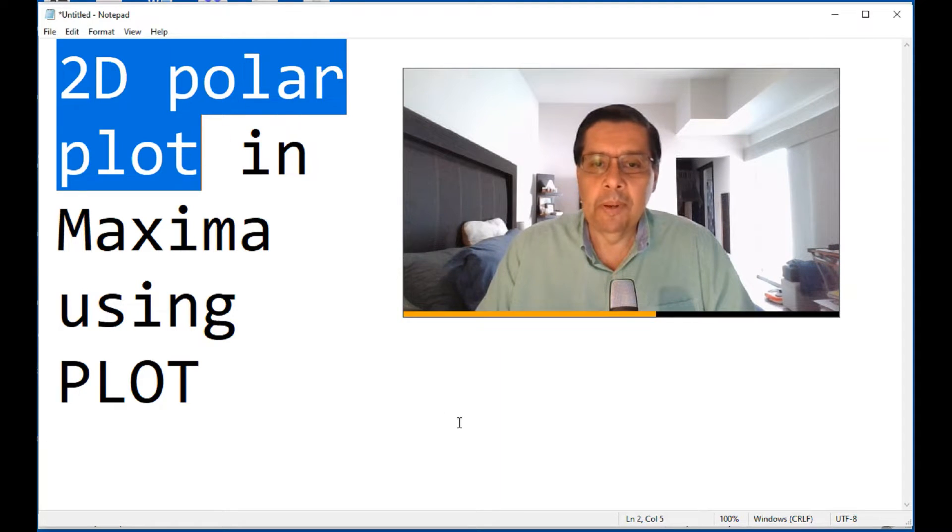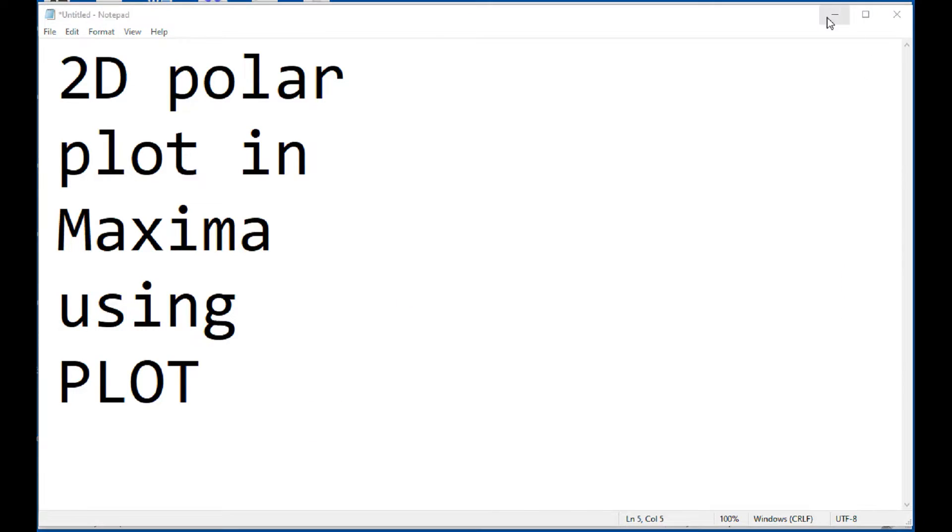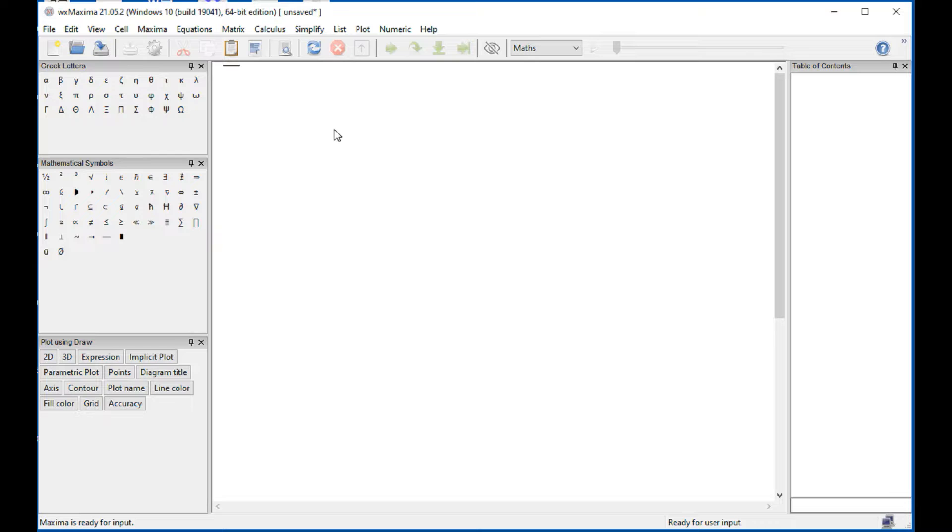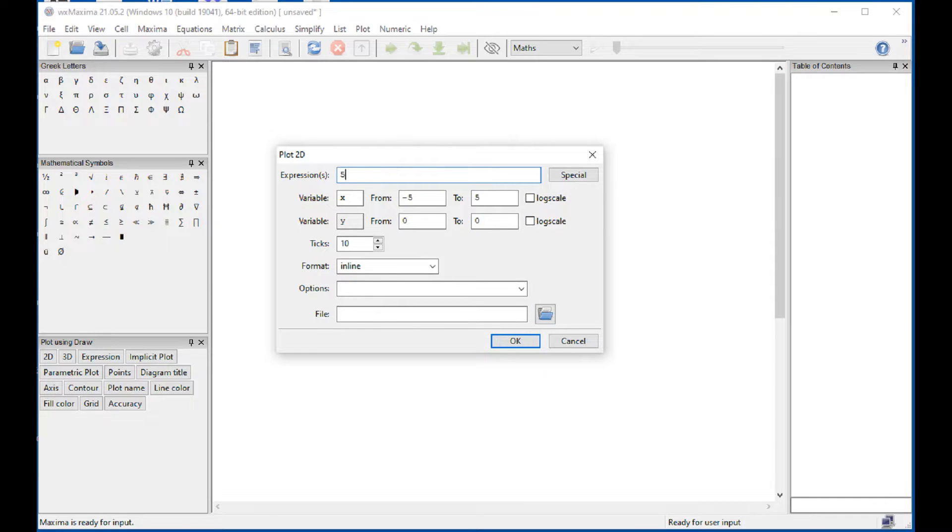We're going to try a two-dimensional polar plot using the plot commands in wxMaxima. We'll start with this document right here and go into the plot, plot 2D. The expression I want to plot is five times one minus the cosine of theta. I'm going to use t for theta.